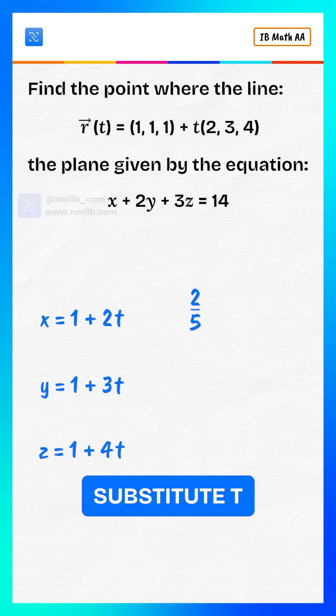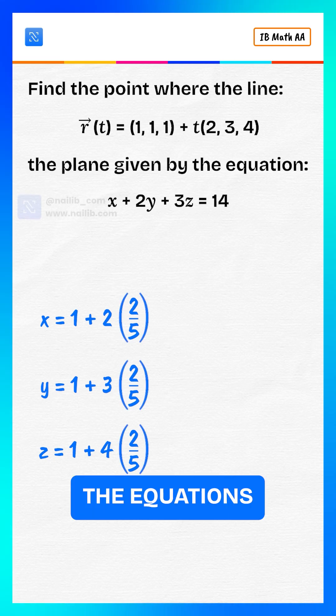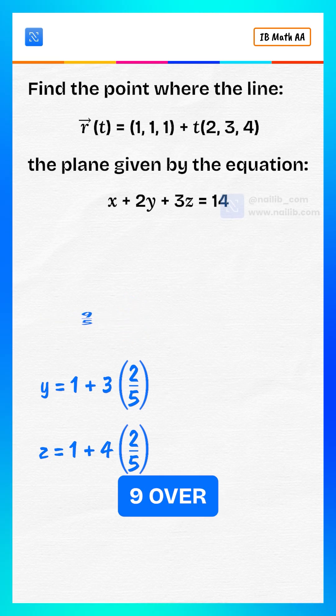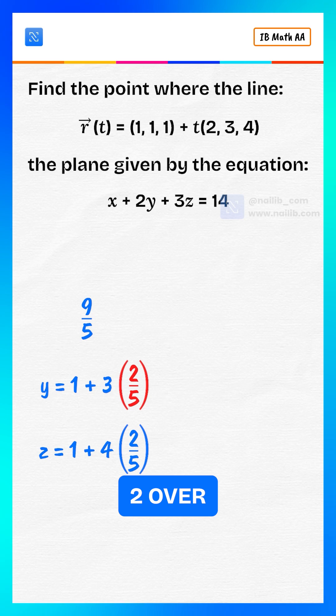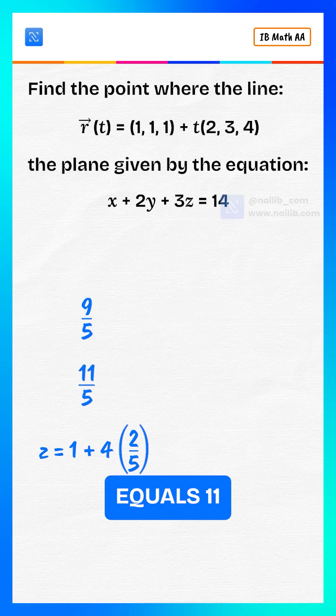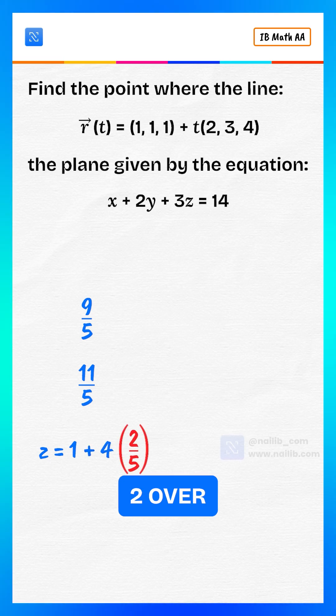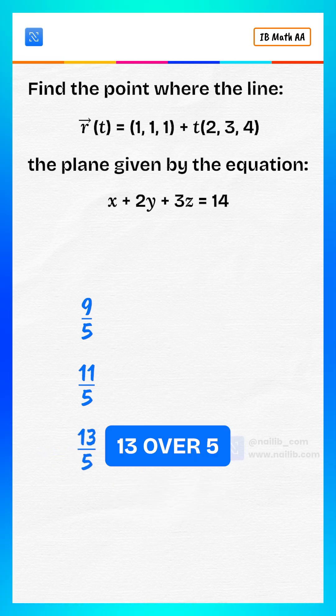Substitute t equals 2 over 5 back into the equations. x equals 1 plus 2 times 2 over 5, which equals 9 over 5. y equals 1 plus 3 times 2 over 5, which equals 11 over 5. z equals 1 plus 4 times 2 over 5, which equals 13 over 5.